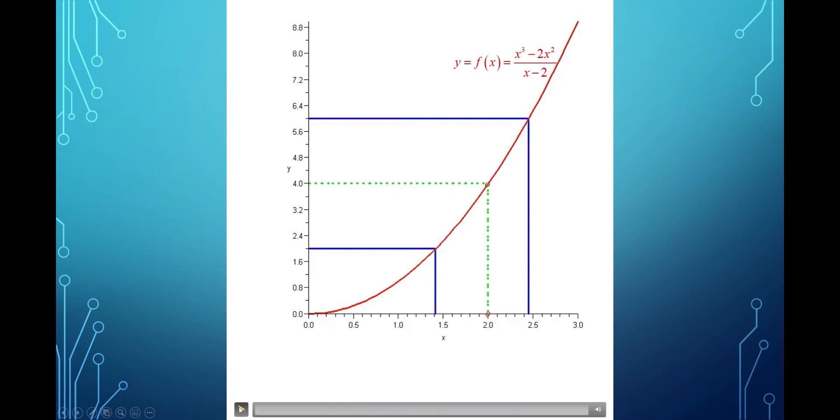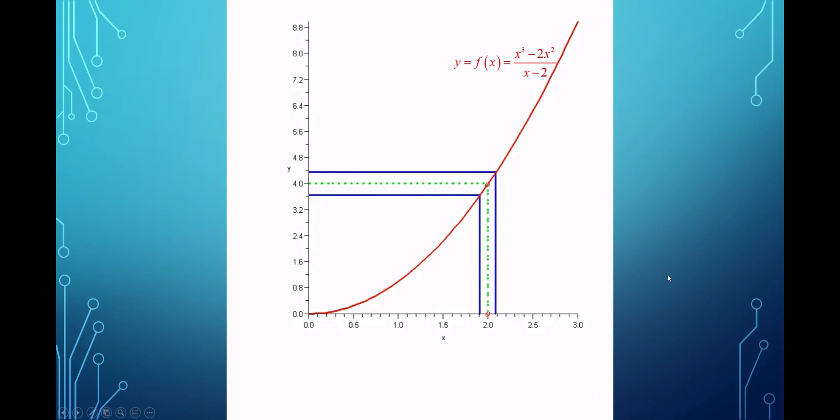And I can animate this and we can see once again that no matter how small this interval is, you can find one over here that will do the trick, so to speak. You can discreetly look at the successively smaller intervals around 4, and see an interval around 2 that's going to be used to satisfy your definition of limit no matter what.